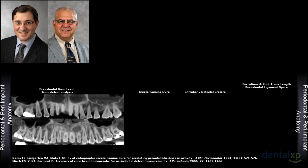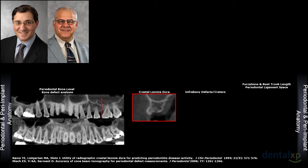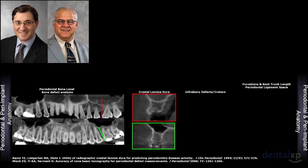From a periodontal perspective on infrabony defects, we often look at the stability of the crestal lamina dura — is it present or not? When we consider imaging today, both of these cases appear present. But on cross-section, it looks present on one slice yet disease activity is clearly happening — you can see the crater interproximately. Whereas in the other patient it looks quite stable, not only from a buccal perspective but also all the way interproximately.